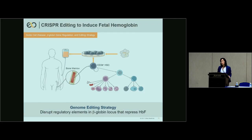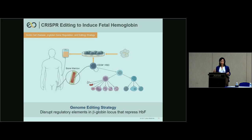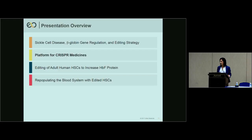Our gene editing strategy aims to disrupt regulatory elements in the beta-globin locus that repress fetal hemoglobin. We isolate CD34-positive cells from bone marrow or mobilized peripheral blood as a marker for hematopoietic stem cells — though the true HSC is a small fraction of this heterogeneous population. These cells are exposed to Cas9 ribonucleoprotein complex particles containing our guide RNA of interest, then re-infused into the patient, and we monitor repopulation of the blood system with edited cells.